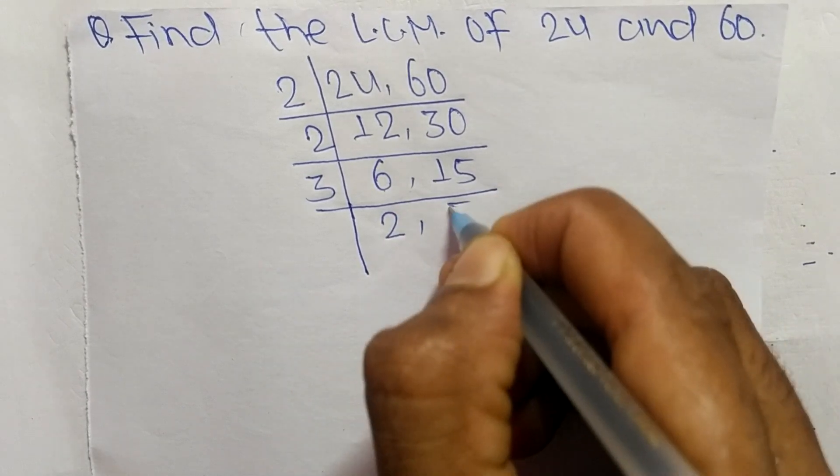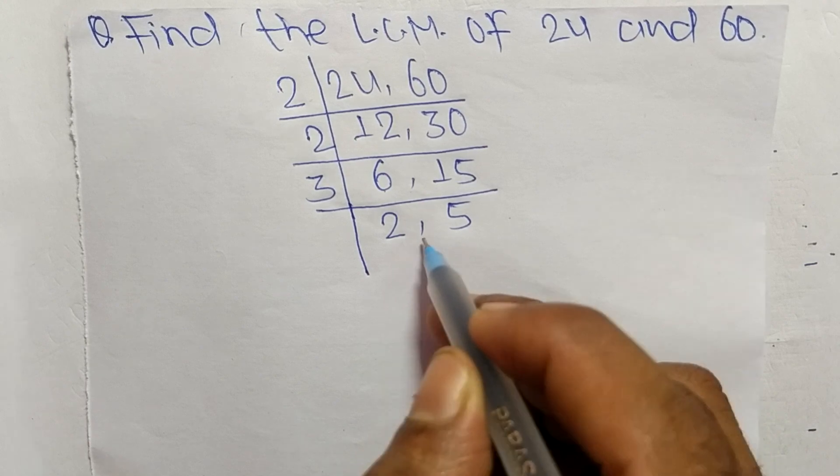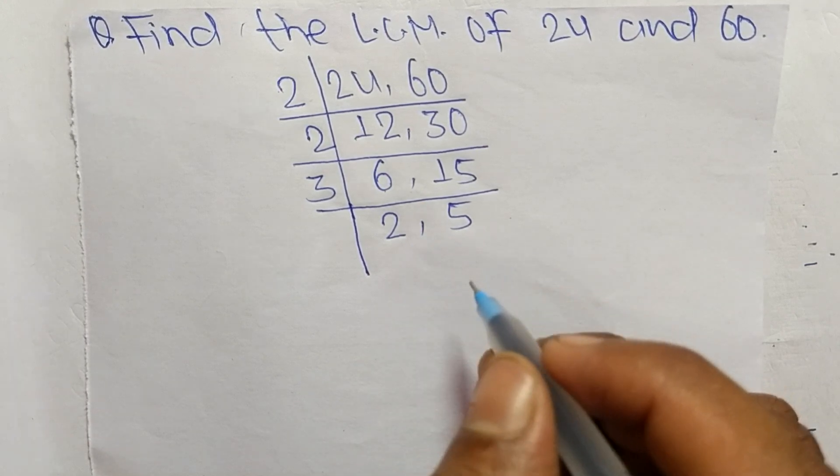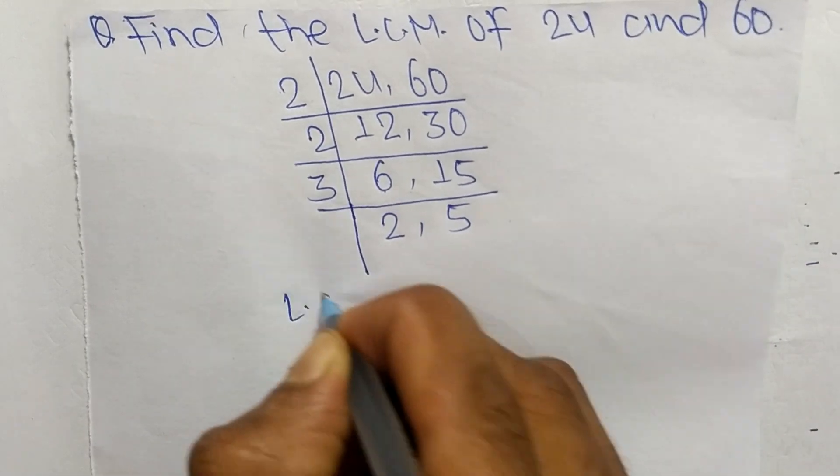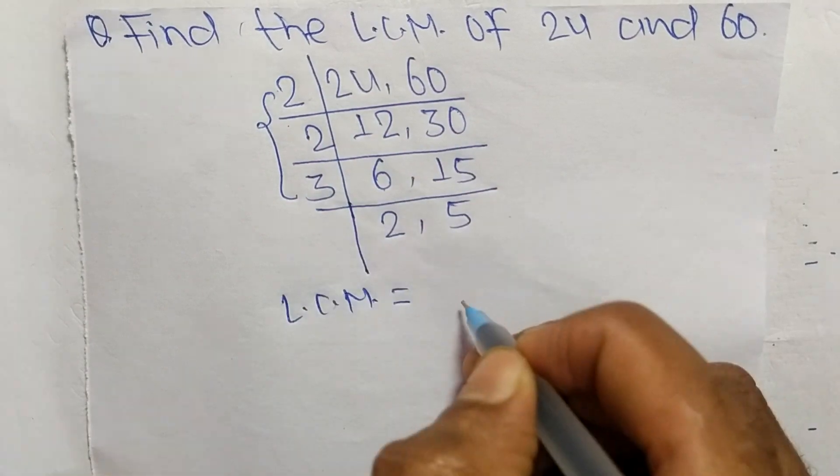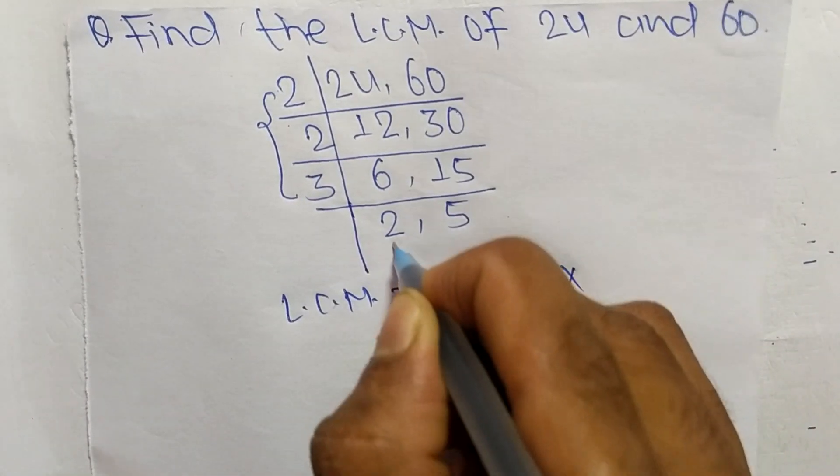So we have here 2 and 5 which are not exactly divisible by same number. So the LCM is equal to, from this part it is 2 times 2 times 3, from this part it is 2 times 5.